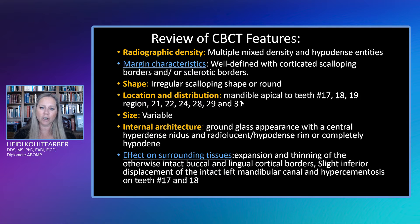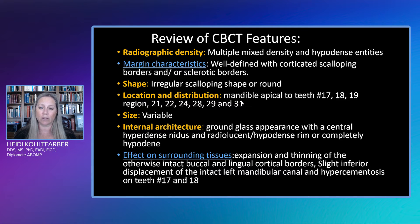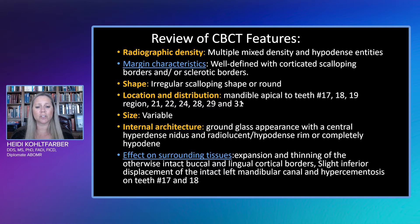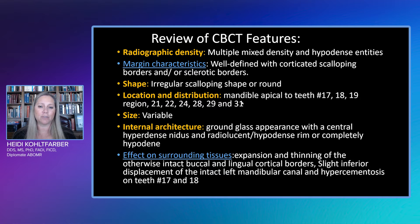The internal architecture with that larger lesion was mainly hypodense — hypodense to the surrounding trabecular pattern. We also saw some that were ground glass in appearance or seem to have more of a central hyperdense nidus, maybe even a radiolucent rim. As for effects on the surrounding tissues, we did see expansion and thinning of the otherwise intact buccal and lingual cortical borders, slight inferior displacement of the intact left mandibular canal, and a little bit of hypercementosis on teeth number 17 and 18.